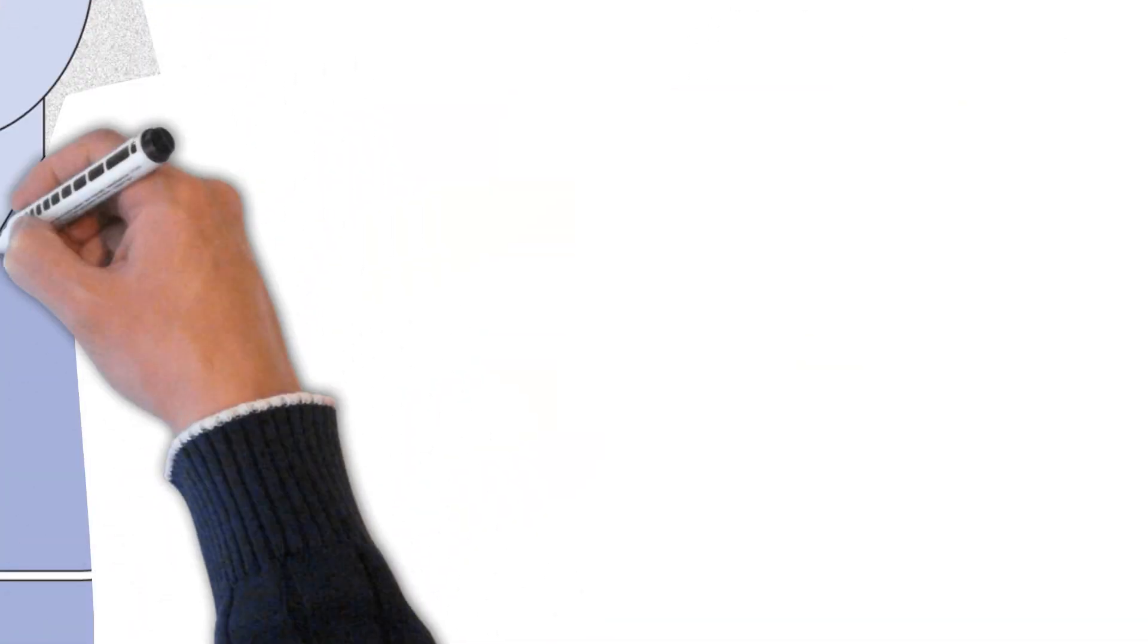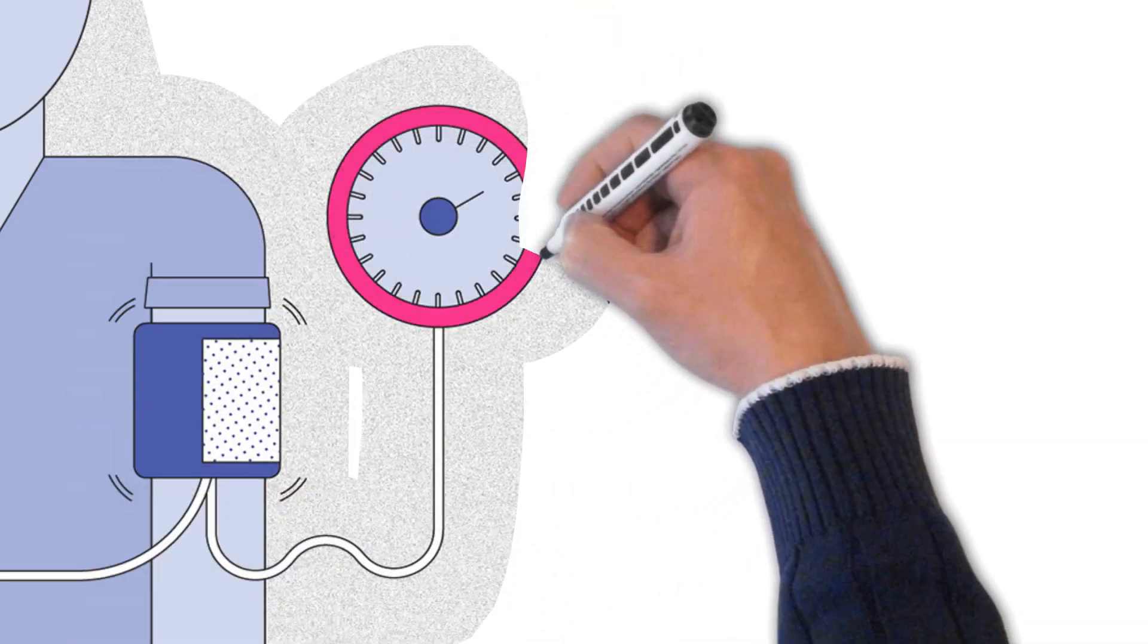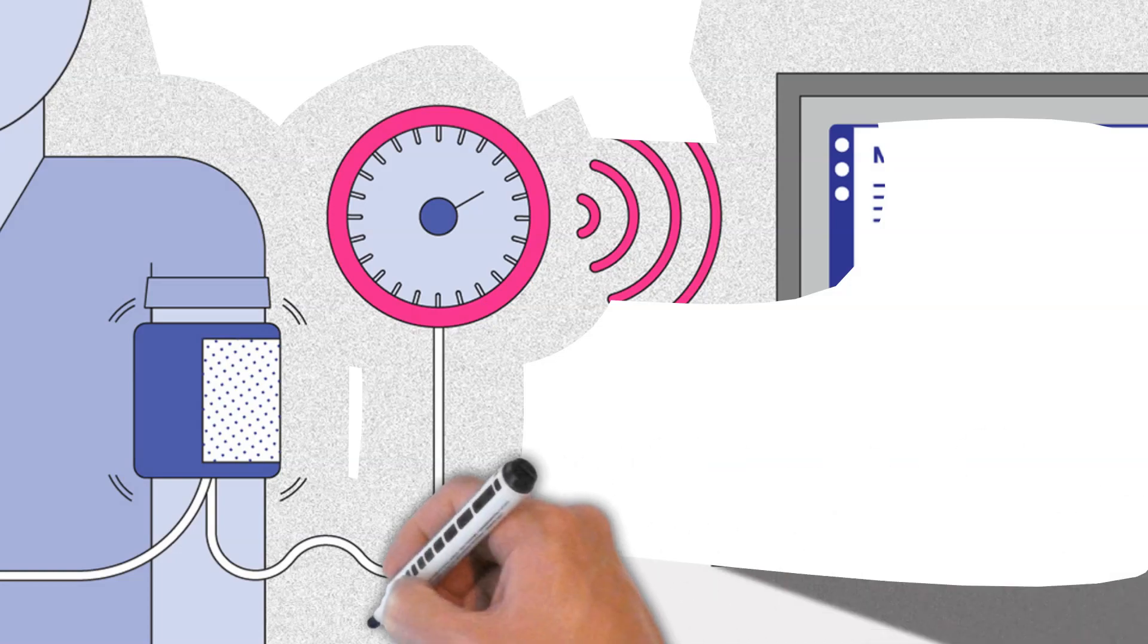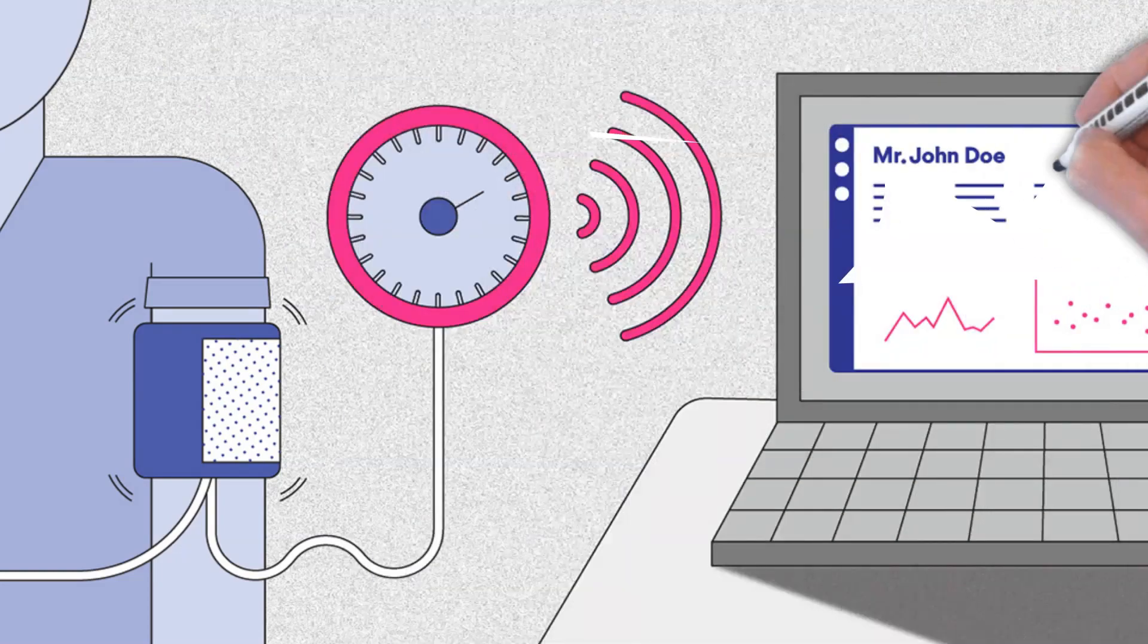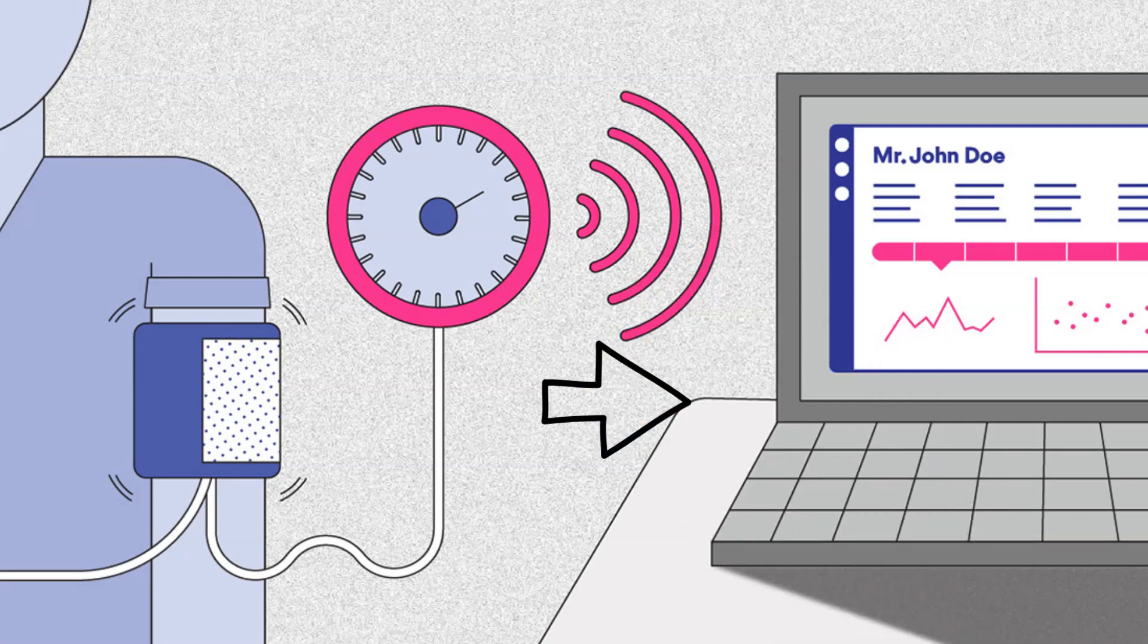What's more, Remedy makes RPM easy for both patients and providers. Easy-to-use cellular enabled medical devices don't require the patient to have a smartphone, app, or even home Wi-Fi. Data is simply transmitted directly from the device to the Remedy platform where their monitoring team can view it.